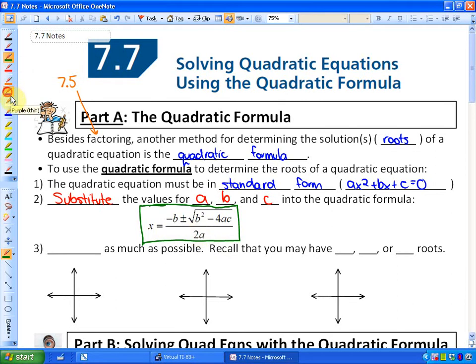The third step is to simplify as much as possible. Recall that you could have zero, one, or two roots.